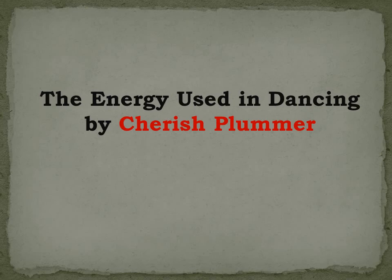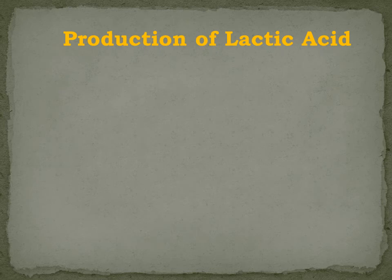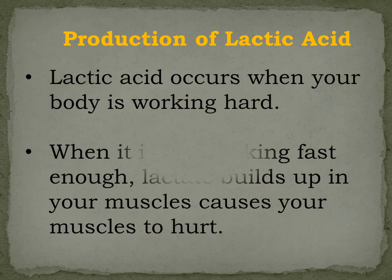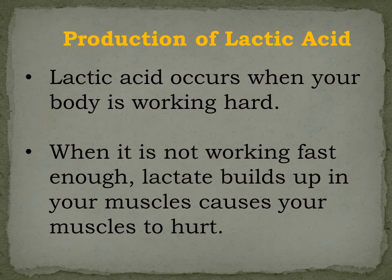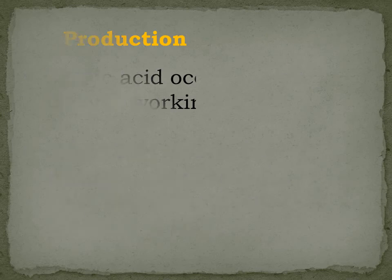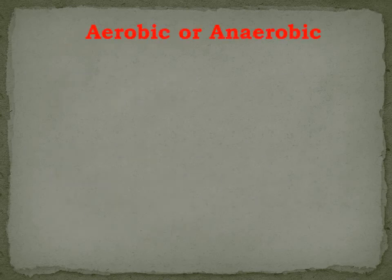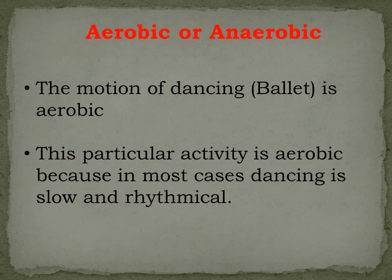Now let's proceed to the energy used in dancing. First, we have the production of lactic acid. Lactic acid occurs when your body is working hard. When it is not working fast enough, lactate builds up in your muscles and causes your muscles to hurt. Aerobic or anaerobic: the motion of dancing or ballet is aerobic. This particular activity is aerobic because in most cases, dancing is slow and rhythmical. It follows a rhythmic pattern.